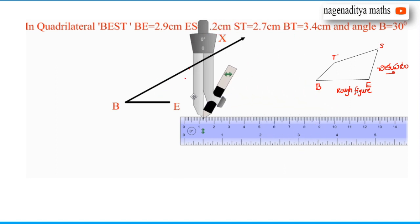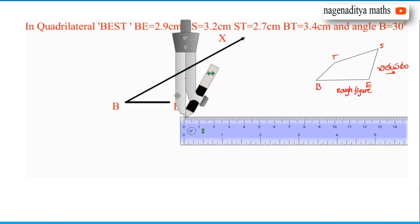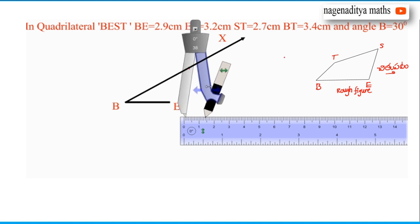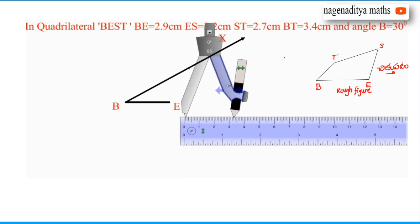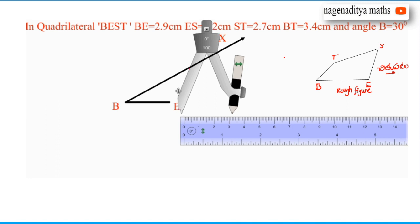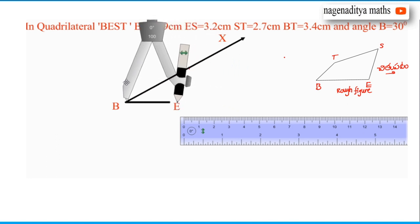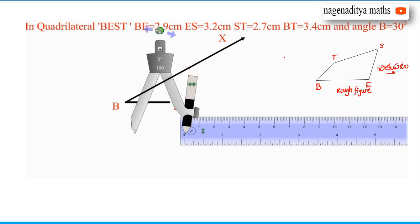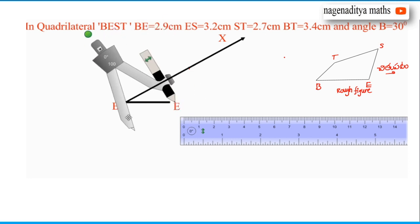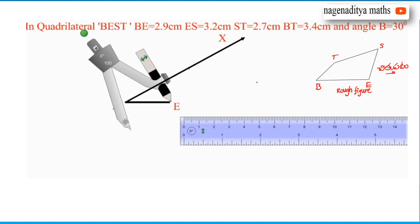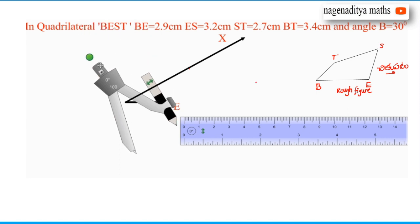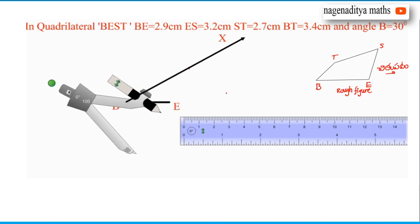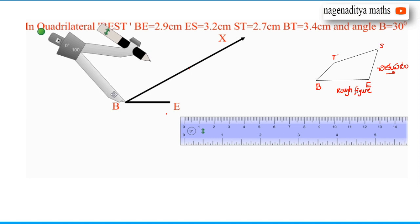We have to take radius 3.4 cm and draw an arc on ray BX from the initial point B. So from point B, measure 3.4 cm and draw the arc on BX.